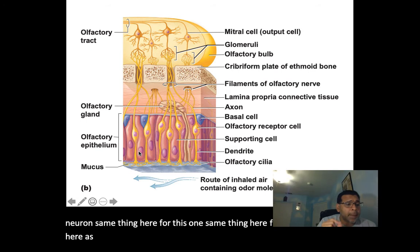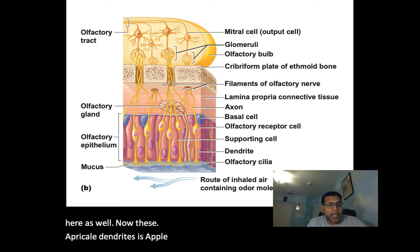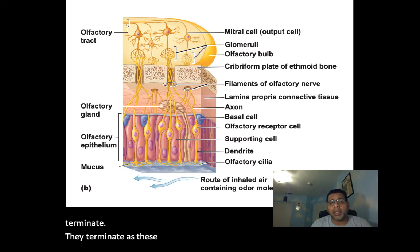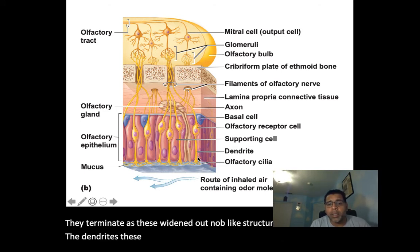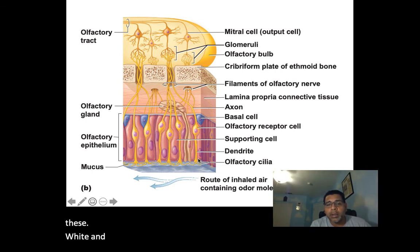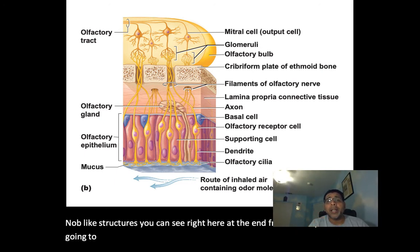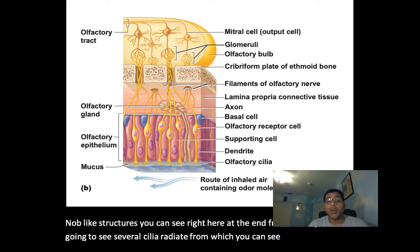These apical dendrites terminate as widened-out, knob-like structures, from which several cilia radiate.